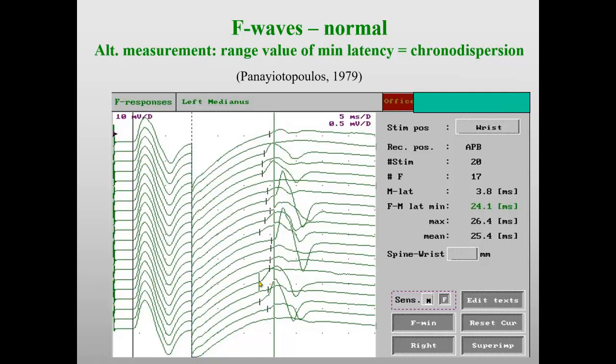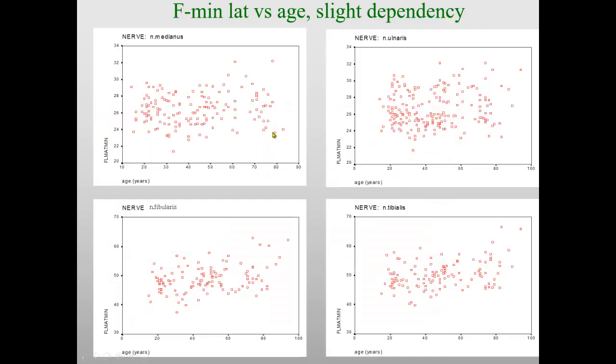Another technique that has been used is called chronodispersion, and that is the range of minimum latencies. Here is the shortest minimum latency, here is the longest minimum latency, and the difference between the two is called chronodispersion. The other parameter that we measure in F-waves is number of responses, for example, per 20 recordings. That is called persistence.